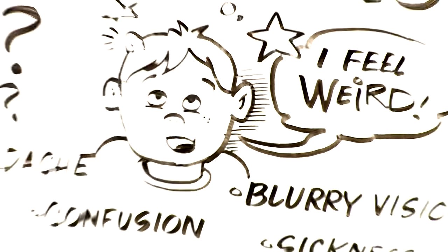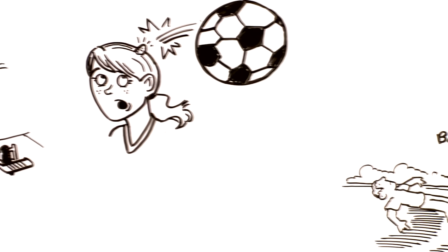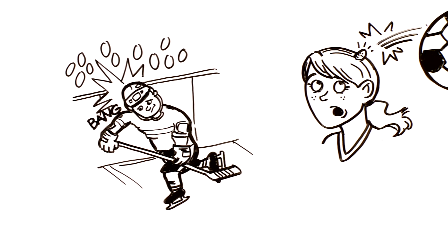These are all signs that the brain's been disturbed. You might even have gotten knocked out, but you don't have to lose consciousness to actually have a concussion. These are all things that show the brain's been disturbed.